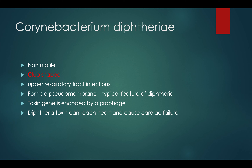Corynebacterium diphtheriae is a non-motile organism. One thing you've got to remember about it: it is club-shaped. Corynebacterium diphtheriae is club-shaped. It causes upper respiratory tract infections, the most common one being diphtheria. The typical feature of diphtheria is the presence of a pseudomembrane on the back of the oropharynx near the soft palate region.